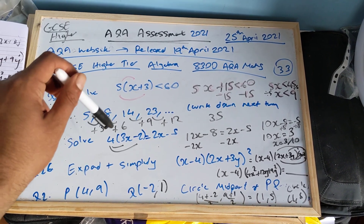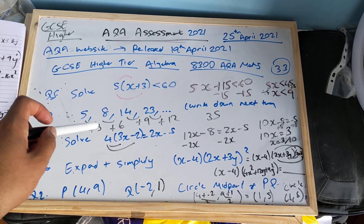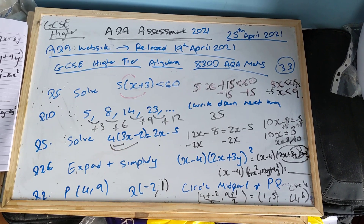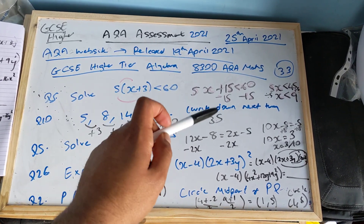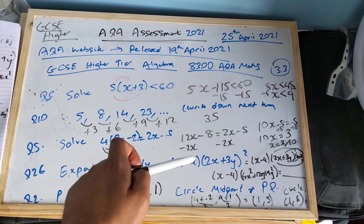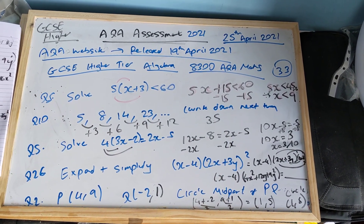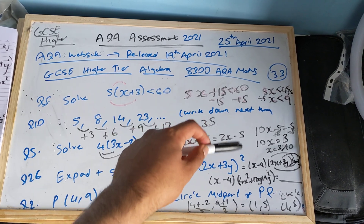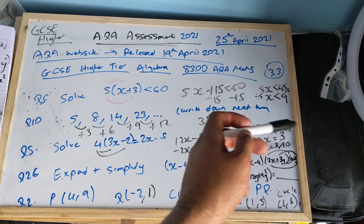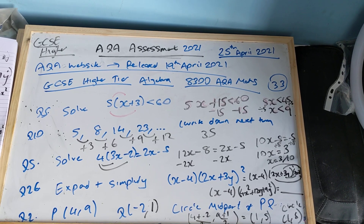Question number five: 4(3x − 2) = 2x − 5. Four times 3x is 12x. Four times minus 2 is minus 8. So 12x − 8 = 2x − 5. Minus 2x on both sides gives 10x. 10x − 8 = −5. Add 8 to both sides: 10x = 3. Divided by 10, x is 3 tenths.